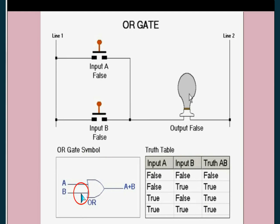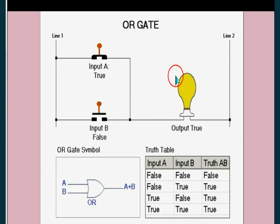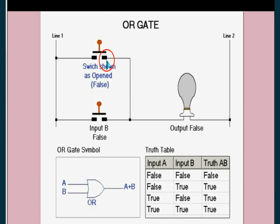This is the OR gate symbol with two inputs A and B. The Boolean expression is A OR B — this is not a plus sign, it means OR. The bulb is the output: when it gives light it means true or one. The switch when not pushed down is off, meaning false or zero.